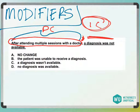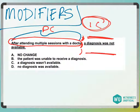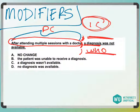So when we have a dependent clause in front, what needs to happen after this comma — after 'attending multiple sessions with a doctor' — what comes after this needs to be whoever attended those sessions. Did a diagnosis attend multiple sessions with a doctor? No, a diagnosis isn't a person, so A is gone. C is gone for the same reason, D is gone for the same reason — did no diagnosis attend multiple sessions with a doctor? No.